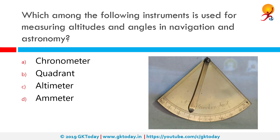Which among the following instruments is used for measuring altitudes and angles in navigation and astronomy? The correct answer is quadrant. A quadrant is an instrument used to measure angles up to 90 degrees, with a maximum angle of 90 degrees.